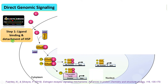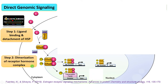Step one is ligand binding and detachment of heat shock proteins. Estrogen diffuses through the plasma membrane and binds to the receptor, causing the detachment of heat shock proteins. Step two is dimerization of the receptor-hormone complex — this complex dimerizes. In step three, this dimer is translocated to the nucleus.